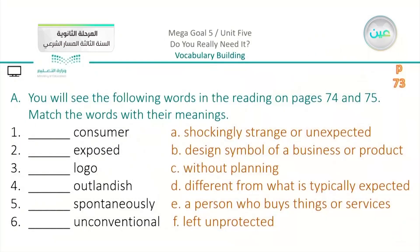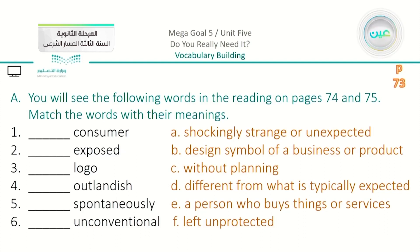On page 73 you will see these words — which also appear in the reading on pages 60 and 61 — and you will match them with their meanings. The six words are: consumer, exposed, logo, outlandish, spontaneously, and unconventional. The meanings to match are: A — shockingly strange or unexpected; B — design symbol of a business or product; C — without planning; D — different from what is typically expected; E — a person who buys things or services; F — left unprotected.